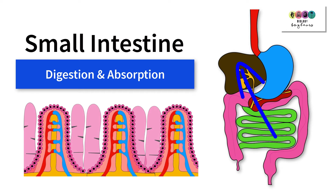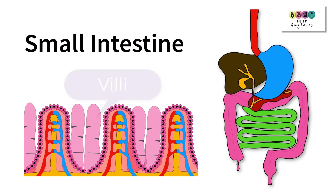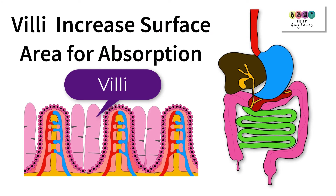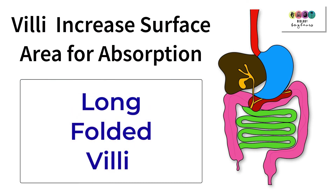If you were looking inside the small intestine with a camera or a scope, it would look velvety, because it has these finger-like projections called villi. They're there to increase the surface area for absorption, giving much more area through which nutrients can pass, so absorption takes place quite quickly. That is a major adaptation of the small intestine. It also has many foldings and is quite long, which are further adaptations for absorption.